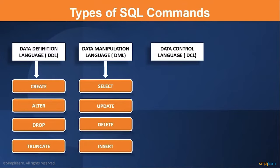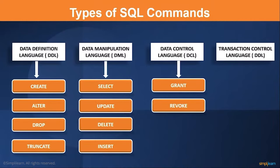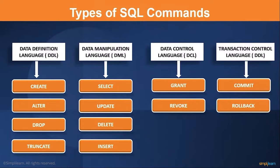The next one is Data Control Language or DCL. DCL is responsible for maintaining security, giving control access and permissions to the database. Commands under DCL are: Grant — used to grant permission to a user to access the database; Revoke — used to cancel or take back the earlier granted permission. The last one is Transaction Control Language or TCL. TCL has three commands: Commit — used to permanently save the transaction; Rollback — used to restore a transaction that is not saved; Savepoint — used to hold a transaction temporarily, which can be rolled back to its previous state at any point.